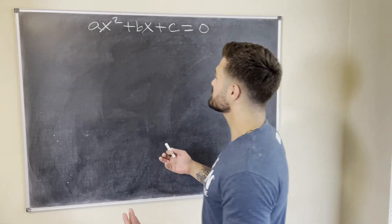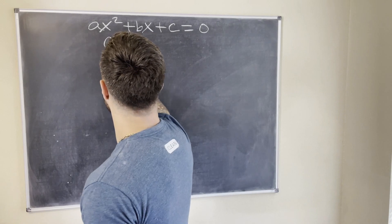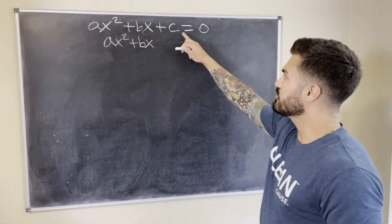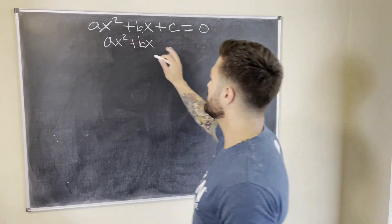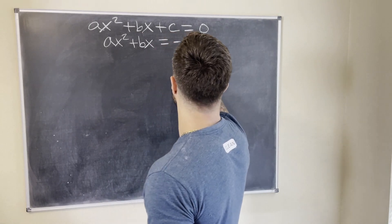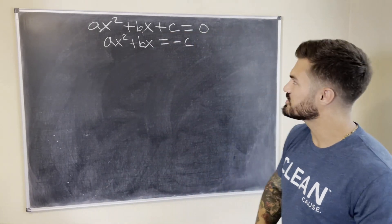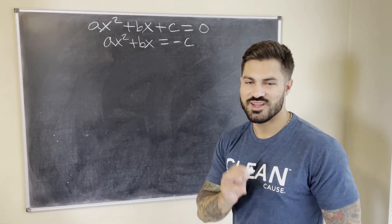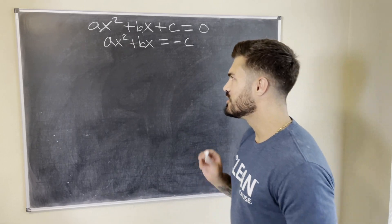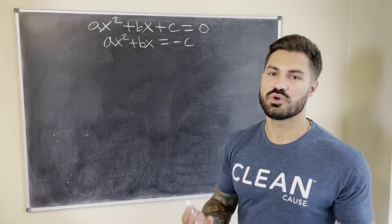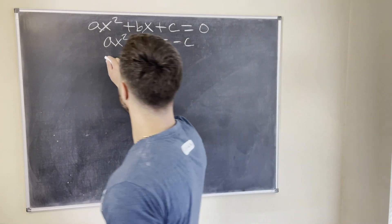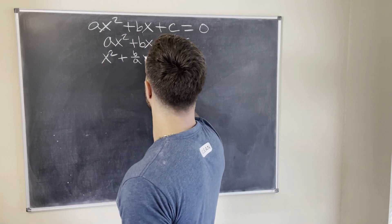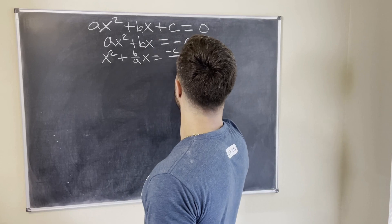We write out ax² + bx + c = 0. The first step with completing the square is to subtract c from both sides — we want all the x terms on one side and everything else on the other. Next, we need the x² coefficient to be one, so we divide both sides by a. That leaves us with x² + (b/a)x = -c/a.